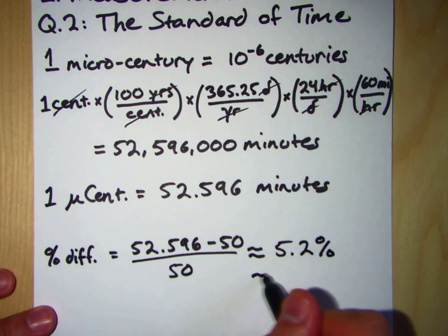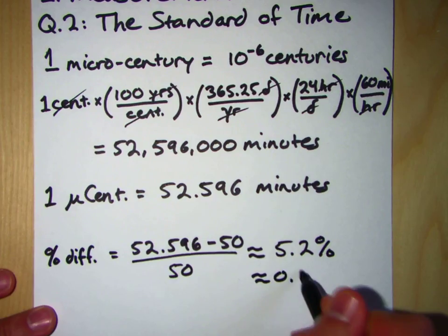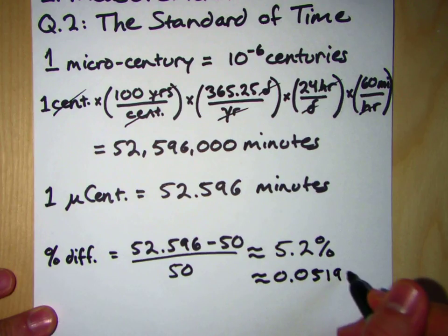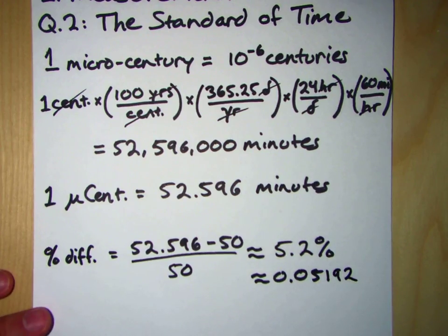If you did this on your calculator, you'd get something along the lines of 0.05, I think it's like 192 or something like that. Let's check that real quick. 52.596 minus 50 divided by 50. Yeah, the real number is 0.05192, which is about equal to 5.2%.